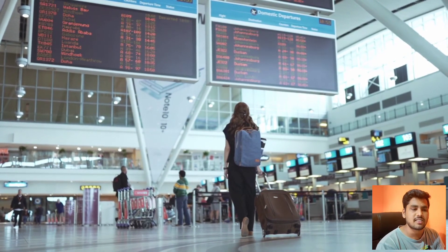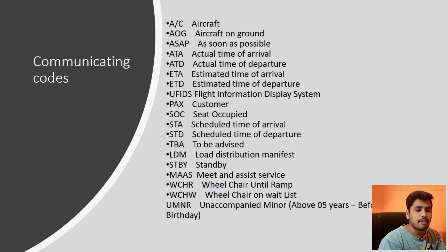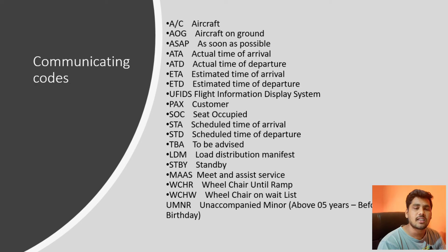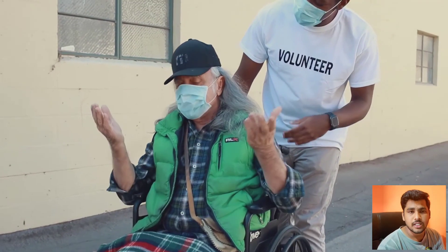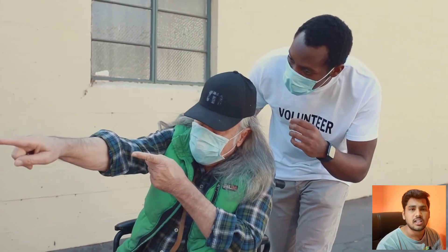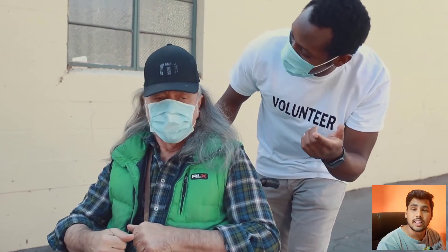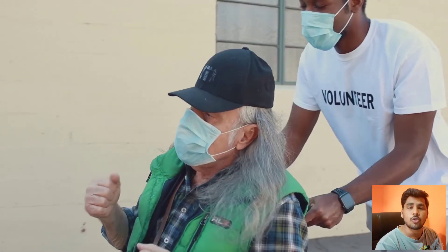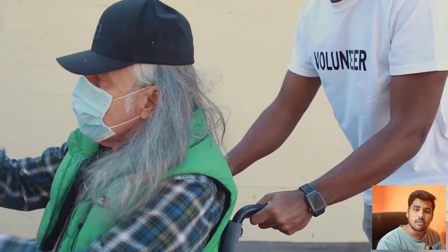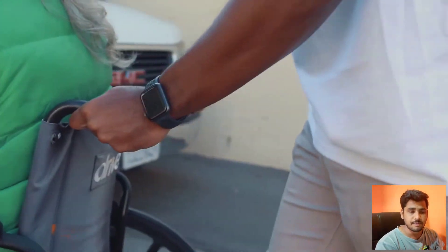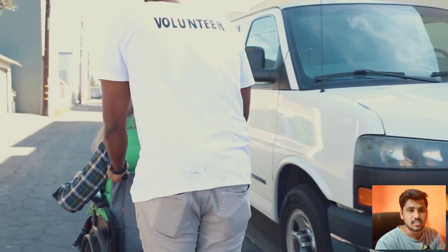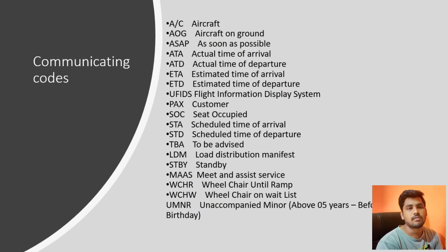Then we have MAAS — M-double-A-S. That means Meet and Assist Service. Meet and Assist Services are given to handicapped passengers, people who need assistance, or someone traveling for the first time who doesn't know much about the airport. Physically challenged passengers — blind, deaf — those kinds of passengers require Meet and Assist Service, so for that we use the code MAAS.